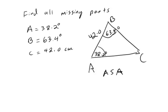In this video, we're going to look at an example of using the law of sines. Here's the given information: angle A is 38.2 degrees, B is 63.4 degrees, and side C is 42 centimeters.